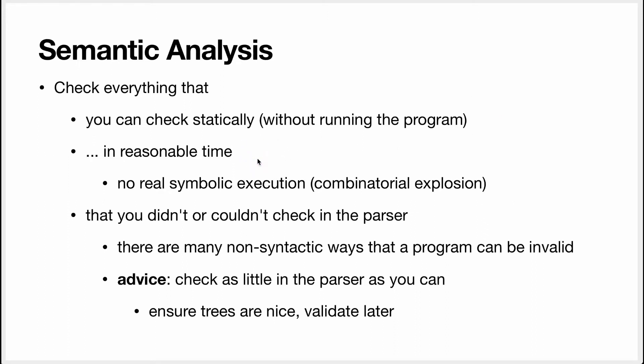It also has to run in a reasonable amount of time. A good example of something interesting that you cannot do because it takes too long is symbolic execution. Symbolic execution is when you try to execute the program but instead of supplying real inputs, you supply symbolic inputs — variables. So imagine you have a function that takes an integer. Instead of giving it 2 or 3, you pass it a variable called x. If the function returns x multiplied by 2, you return a symbolic variable that knows its value equals x multiplied by 2.